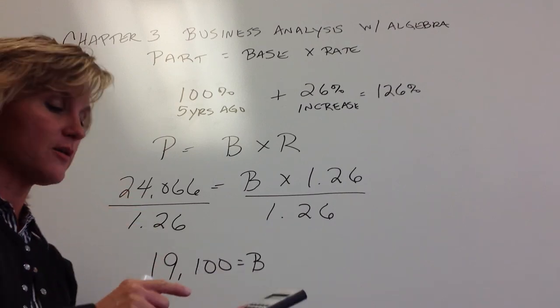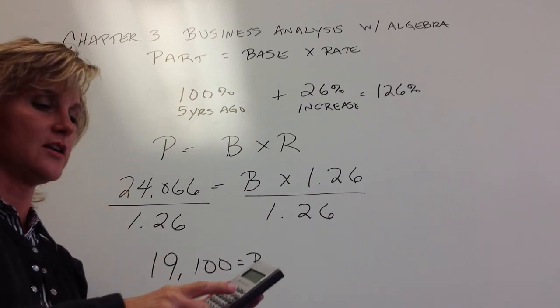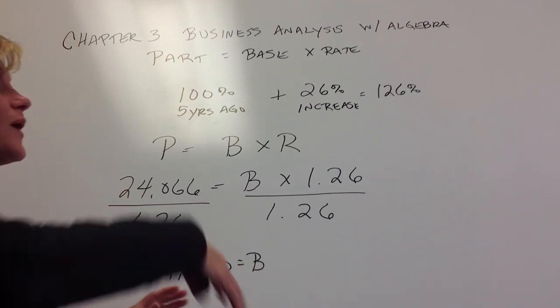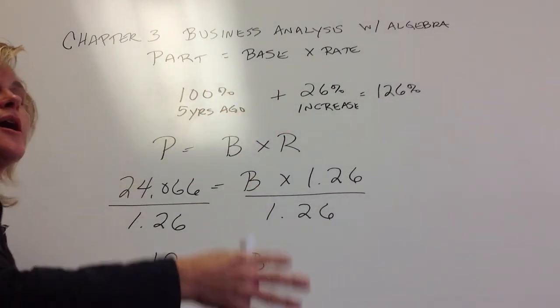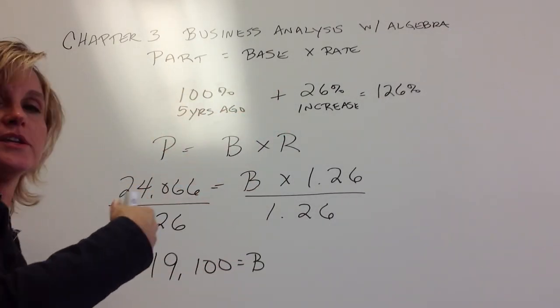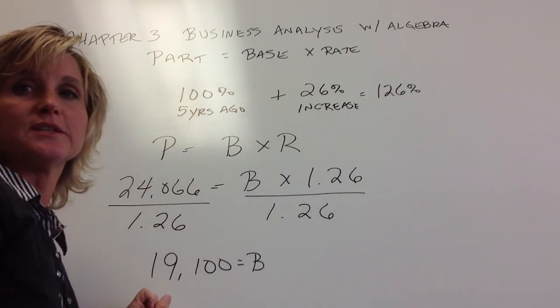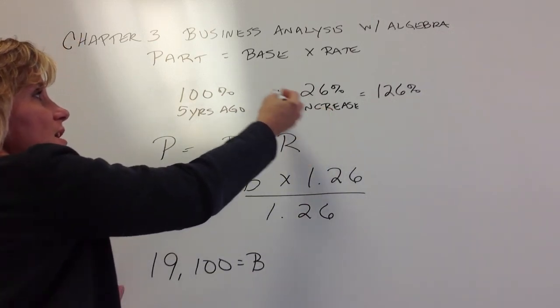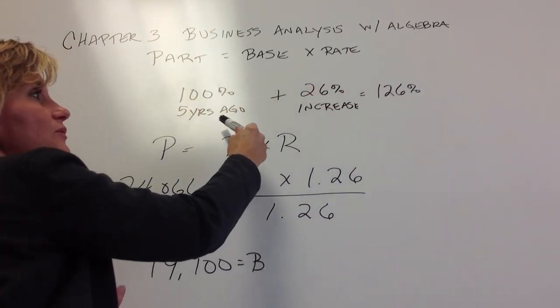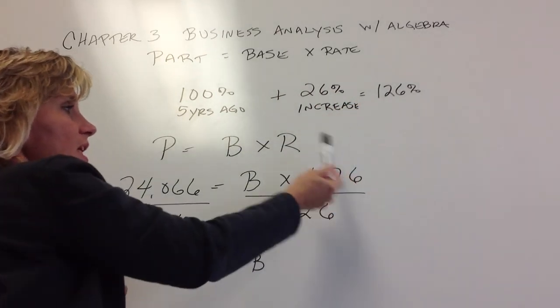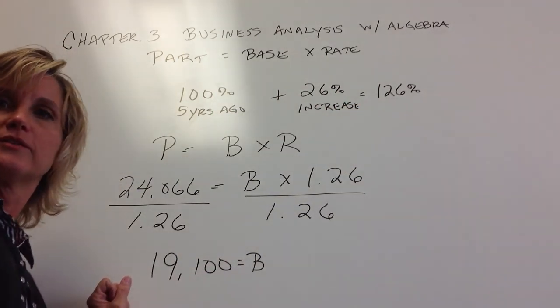And that gets you in the ballpark, but it is not correct, and you're not going to get the points on your test. So you have to go back and do that first step and think about the actual increase. The decrease, you would do it the same way, except for then you'd subtract. But I always do that first step to figure out what's my new percentage, then I get back to my part equals base times rate formula.